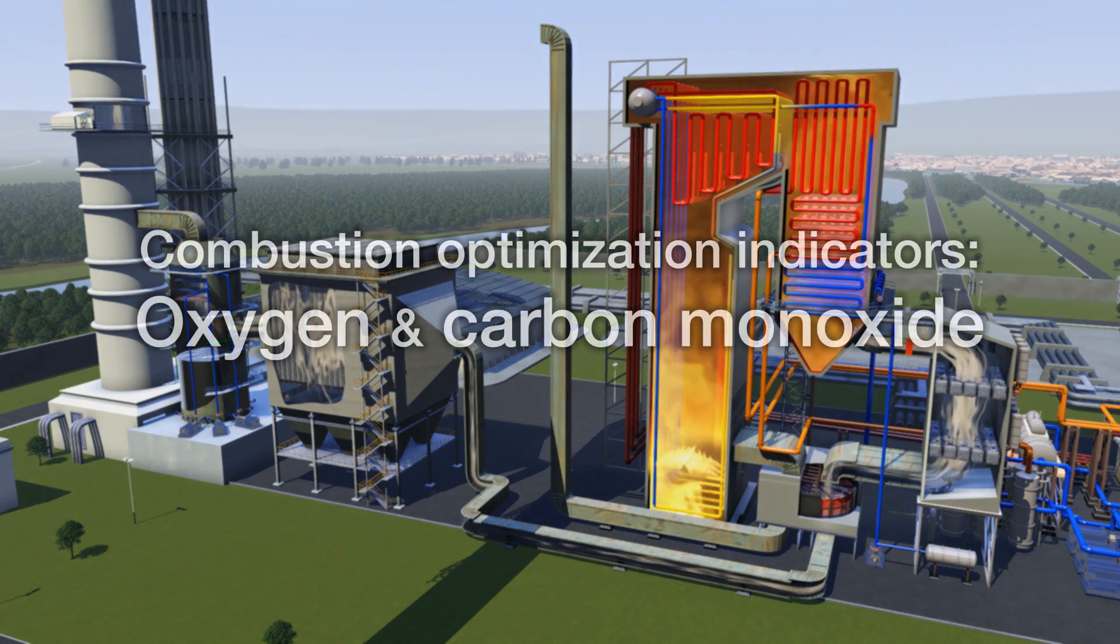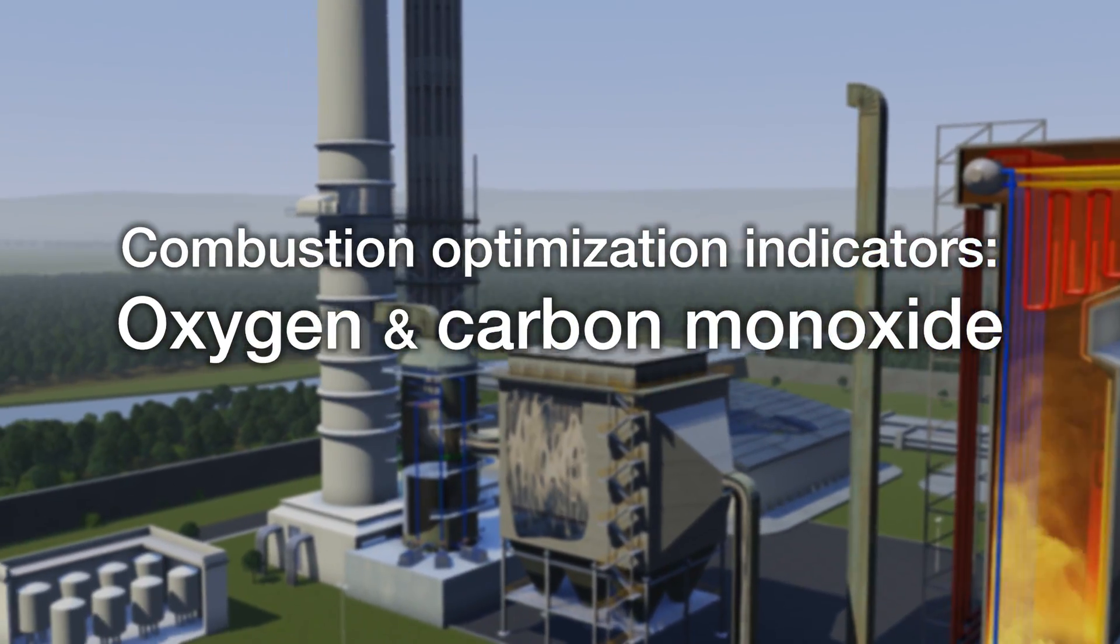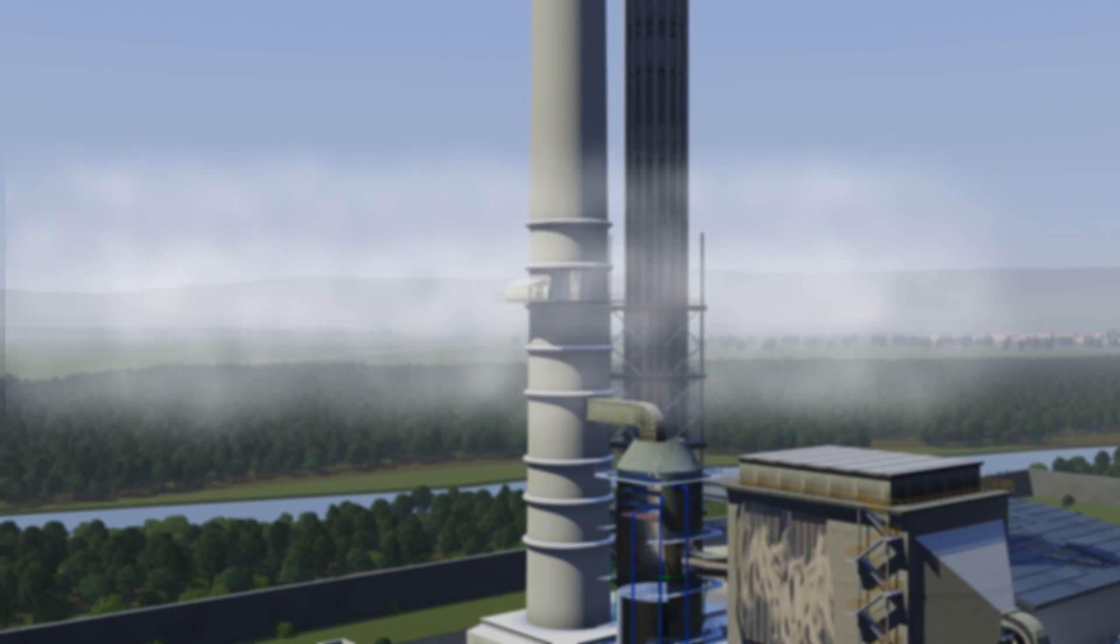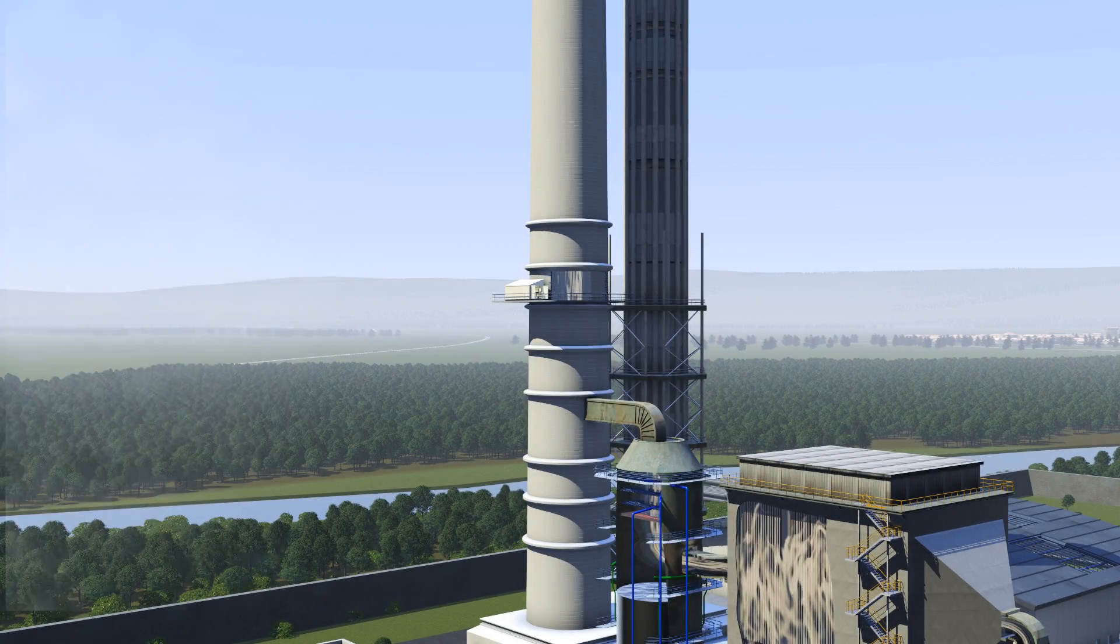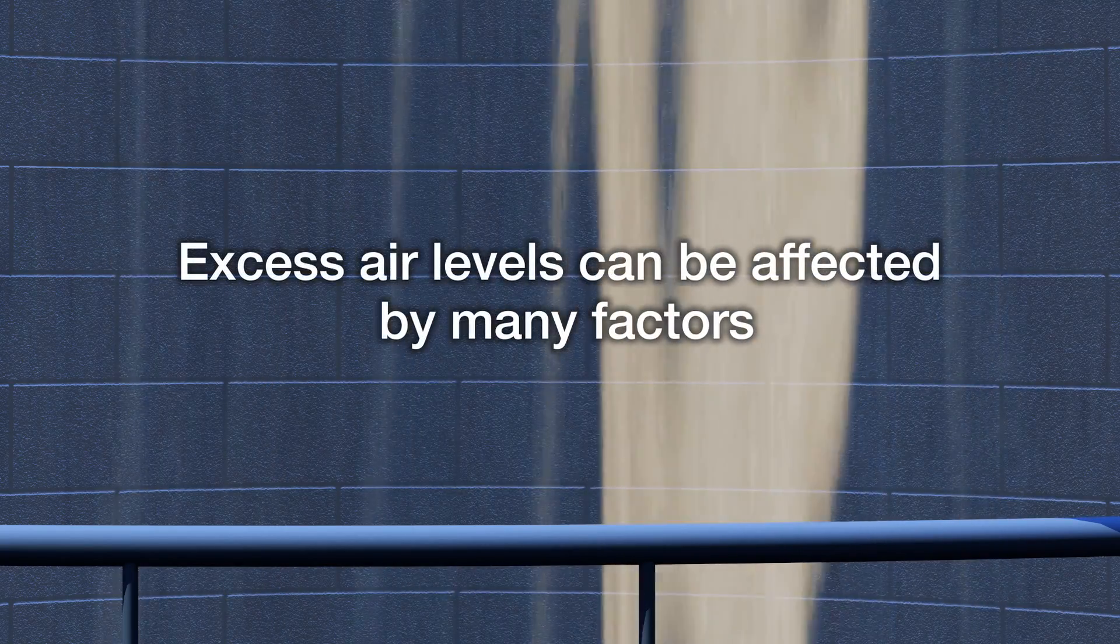Two gases that provide a particularly good indicator for combustion optimization are oxygen and carbon monoxide. Accounting for approximately 21% of the composition of atmospheric air, oxygen provides an excellent indicator for regulating excess air.